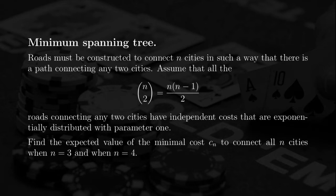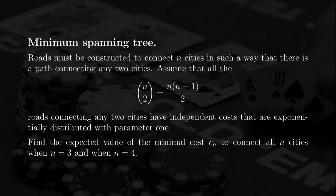Because there are N cities, there are N choose 2 possible pairs of cities, so N choose 2 possible roads. The goal is to find the expected value of the minimum cost CN to connect all N cities. The problem becomes very complicated if N grows, so we will only solve it when N equals 3 and when N equals 4.